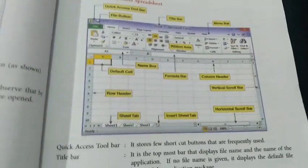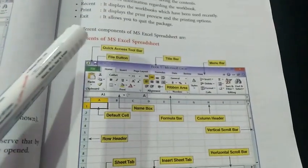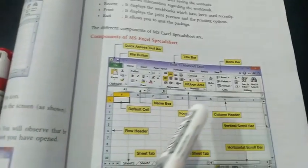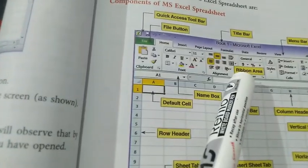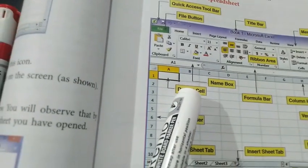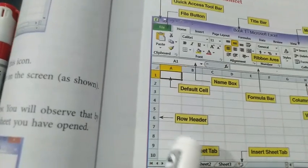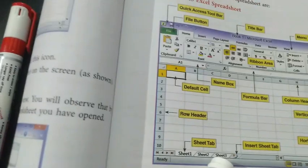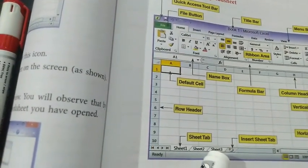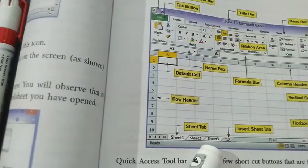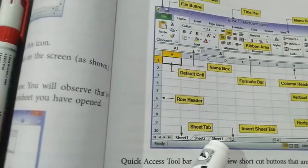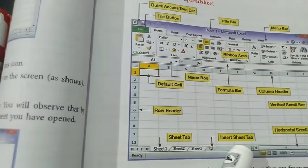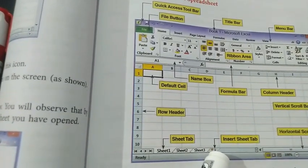There are different components present: Quick Access Toolbar, File button, Title Bar, Menu Bar, then Ribbon Area, Name Box, Default Cell, Row Header, and Sheet Tab. All of you see where the Sheet Tab is present — at the bottom. By default, three sheets are present named Sheet 1, Sheet 2, Sheet 3, but according to our choice we can change the name according to our need.